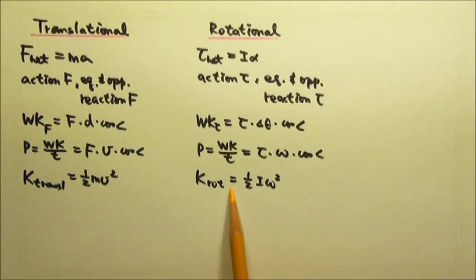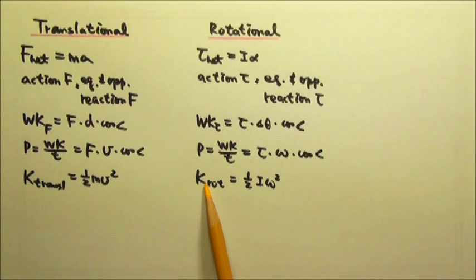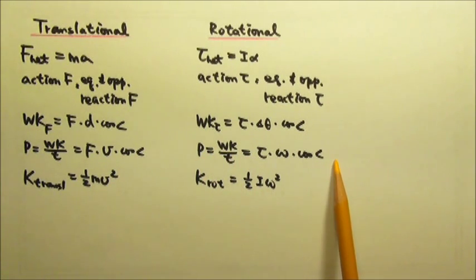We have rotational kinetic energy one half I omega squared. Work and energy are in joules. The rotational versions are still joules and the power will be joules per second.